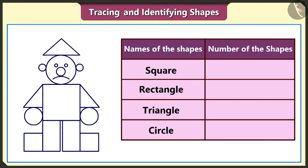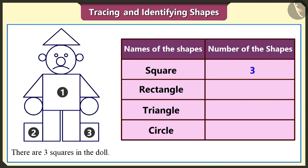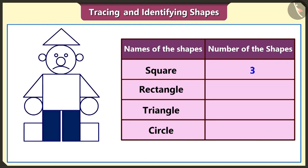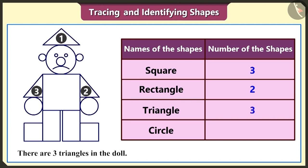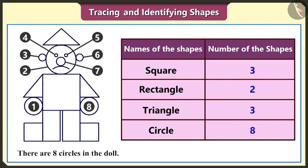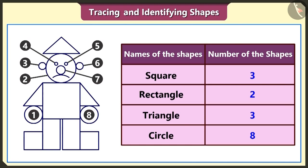Let's now tell him the number of these shapes used in his making — we can make him smile. There are one, two and three squares used to make this doll. There are one and two rectangles in the doll. There are one, two and three triangles in this doll. And there are one, two, three, four, five, six, seven and eight circles used here. So there are three squares, two rectangles, three triangles and eight circles used in the making of the doll.